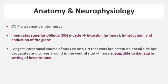It is important to know that cranial nerve 4 has the longest intracranial course of any cranial nerve. It's also the only cranial nerve to exit the brainstem dorsally, decussate, and then curve around ventrally before entering the orbit via the superior orbital fissure. The extensive intracranial course of cranial nerve 4 is what makes it much more susceptible to damage in the setting of head trauma in comparison to other cranial nerves.